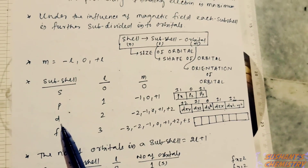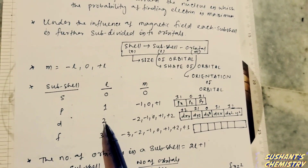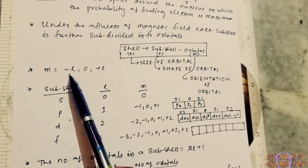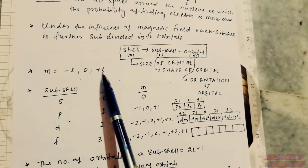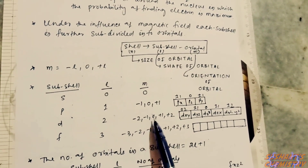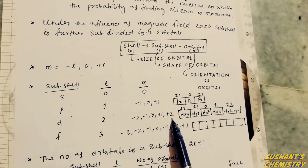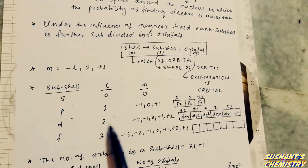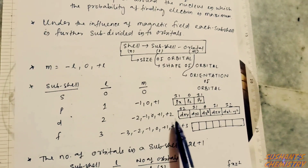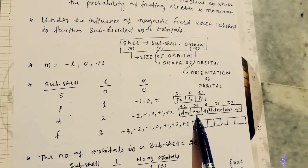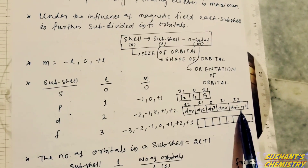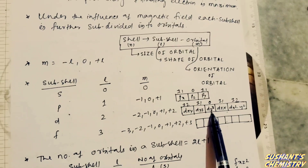For the d subshell, the value of l equals two. By putting l equals two in this formula, we get minus two, minus one, zero, plus one, plus two. That means the d subshell contains five orbitals: dxy, dyz, dzx, dx²−y², and dz².